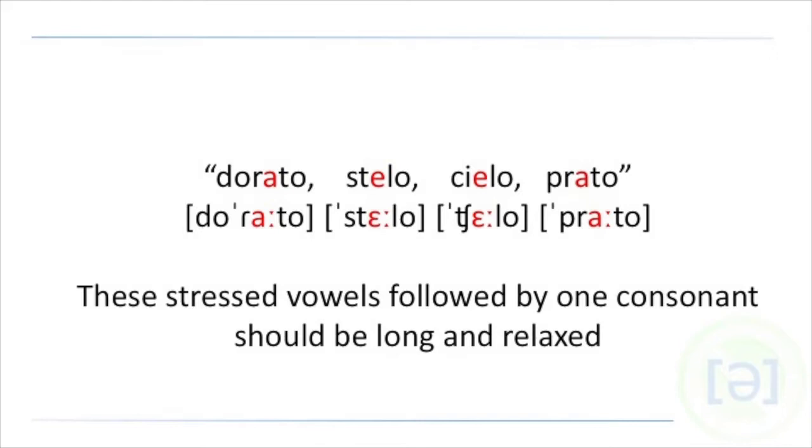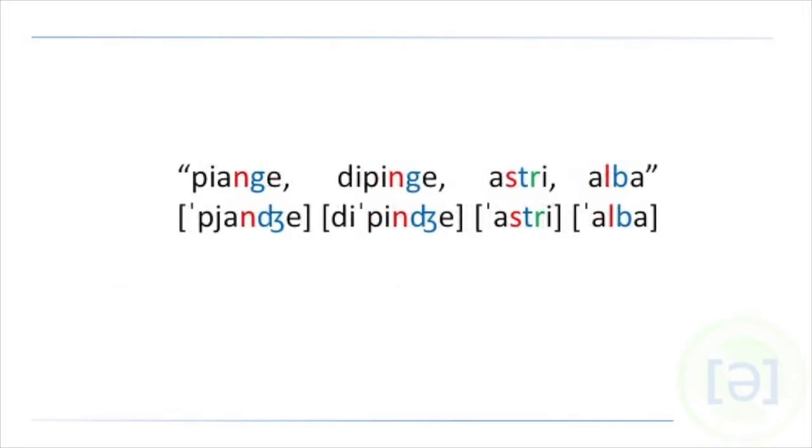When I say double consonant, I don't only mean two of the same consonant but also two different consonants like in the word piange. Always two equal consonants even if they're different letters, like astri, dipinge, alba.